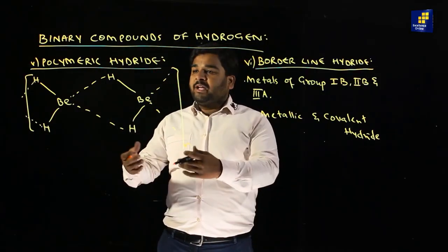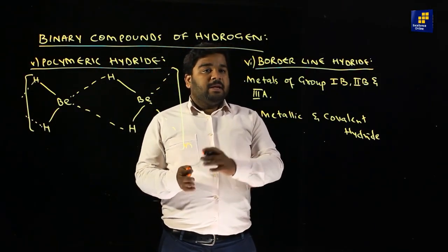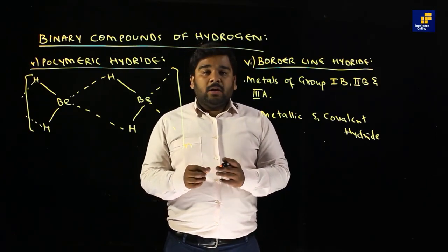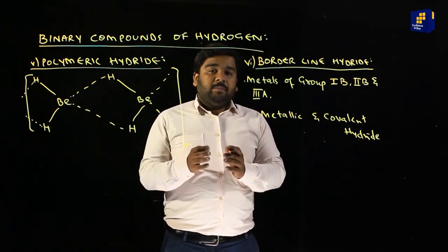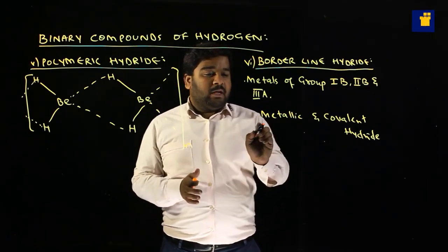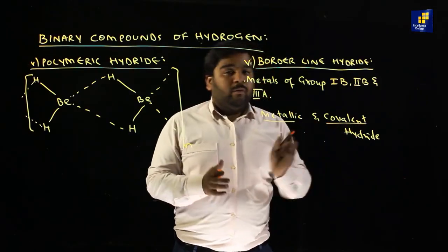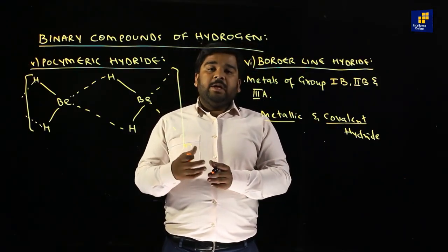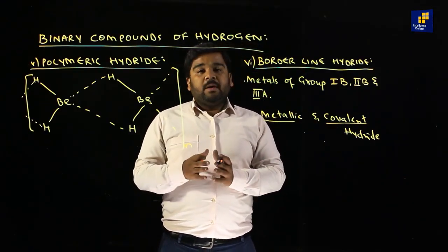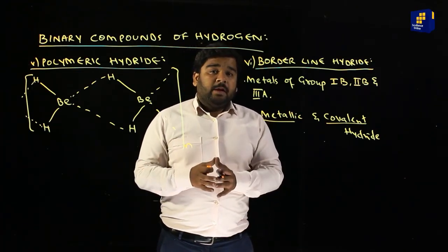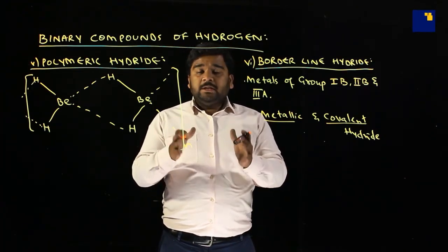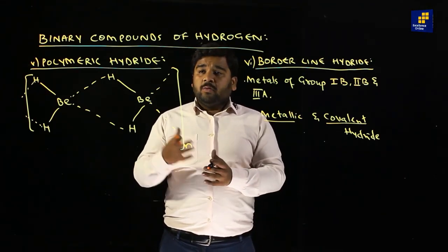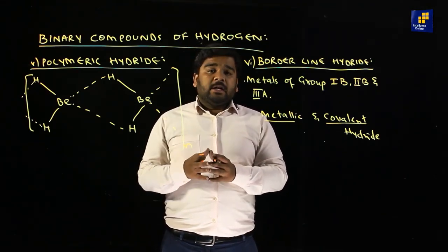Last type है: borderline hydride — borderline hydrides are having characters between metallic hydride and covalent hydride. यह form करते हैं members of group 1B, 2B and members of group 3A।